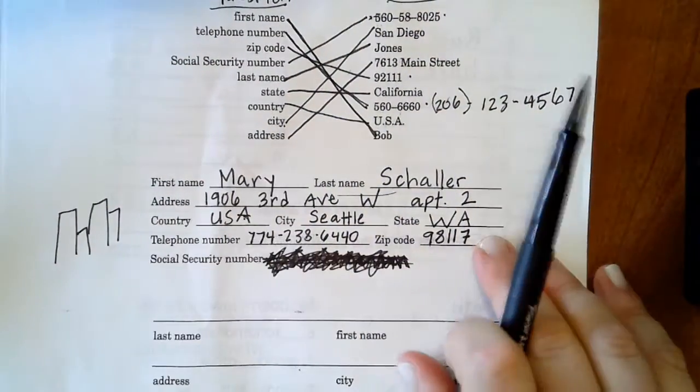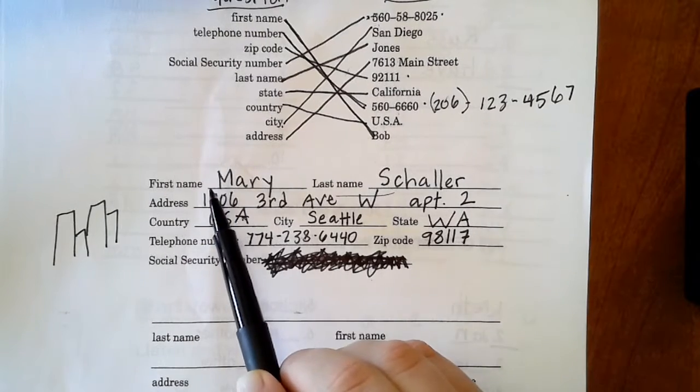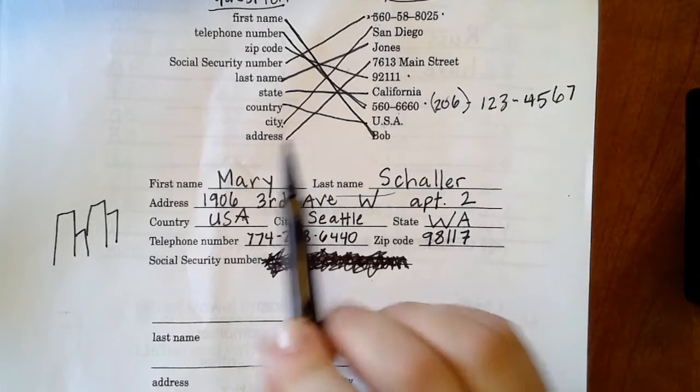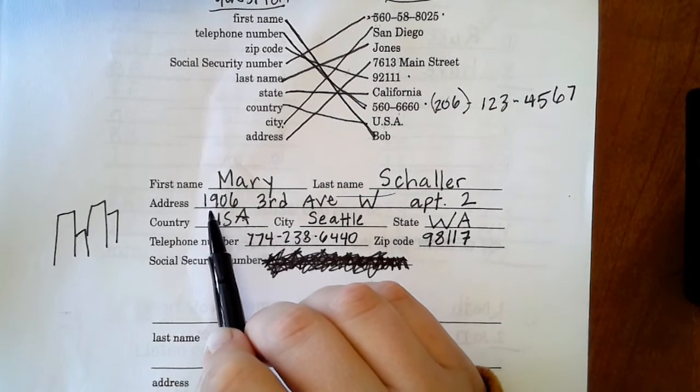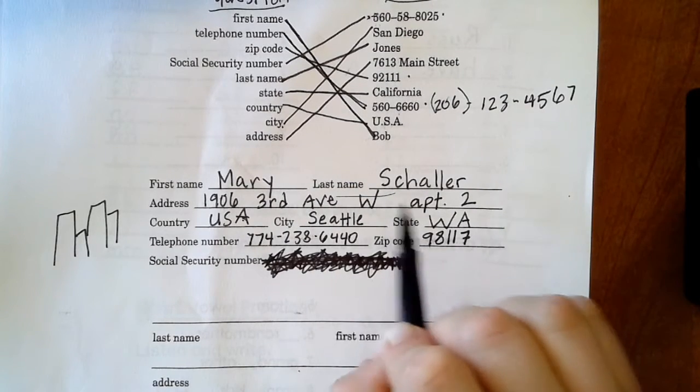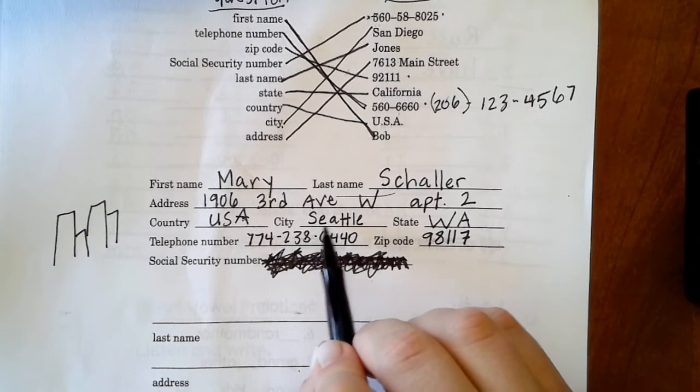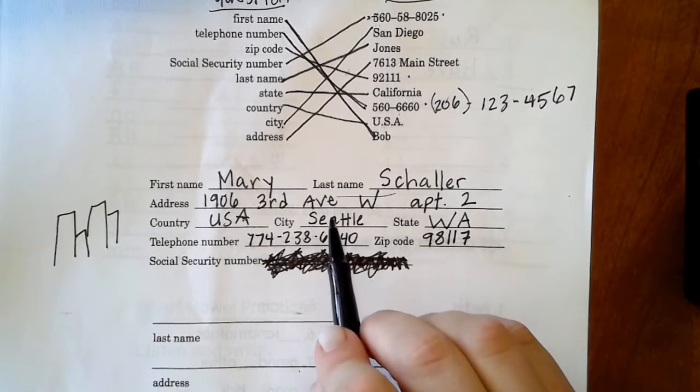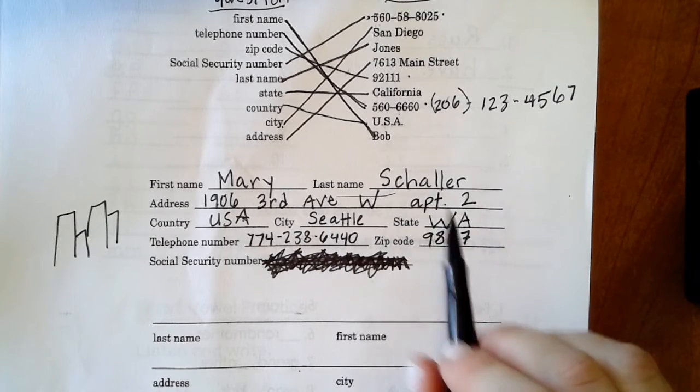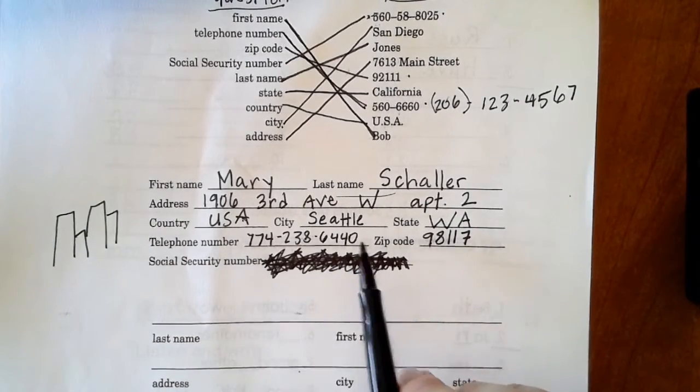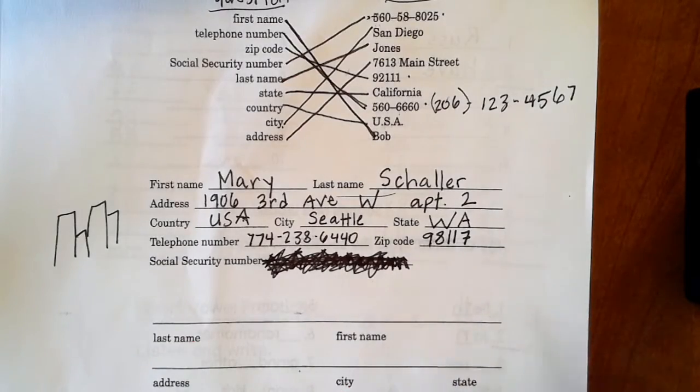And then down here you just write your personal information. So this is me, but you write yours. First name, last name, then your address. Here this is just your house number, street, and apartment number. Then country, city. For me it is Seattle, for you Tukwila or Kent. State Washington, then your telephone number and your zip code. No social security.